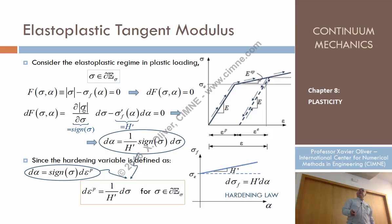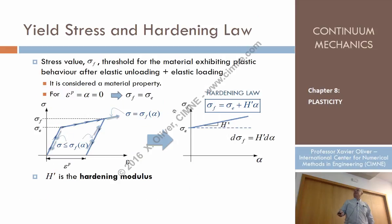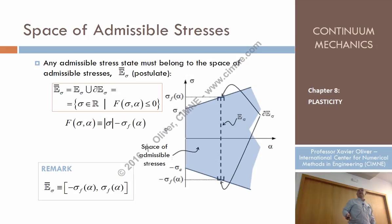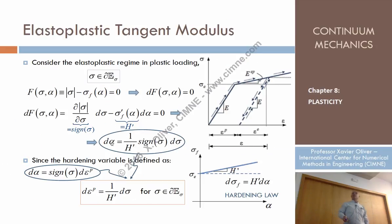The differentiation of the modulus of the stress with respect to stress is the sign of the stress. And the differentiation of the yield stress with respect to alpha — recall that the yield stress is given by the hardening law — so the differentiation of the yield stress with respect to alpha is the slope H prime, the hardening-softening modulus. So finally, by replacing, we have that the differential of alpha, going to the other side, is 1 over H prime times the sign of sigma times the differential of sigma.